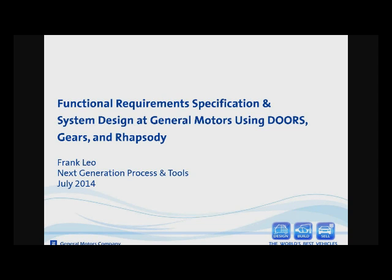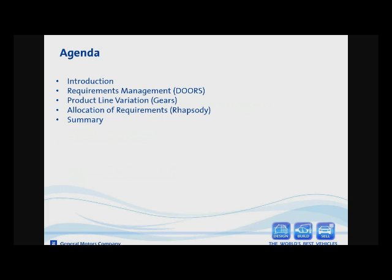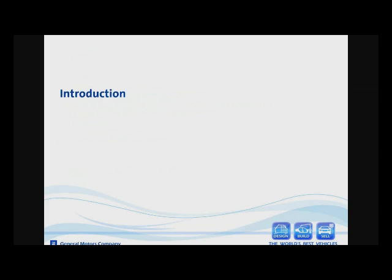I'll talk about what we're doing in Doors, product line variation in Gears, and then show how we're doing allocation of requirements in Rhapsody, and then have a brief summary.